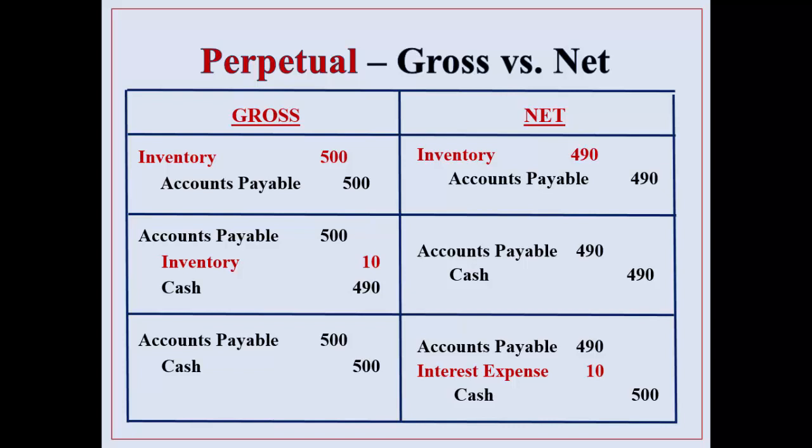Now if they did not pay within the discount period — that's the last row. Under the net method the $10 discount loss represents an interest expense for not paying. This is on the buyer side of course.